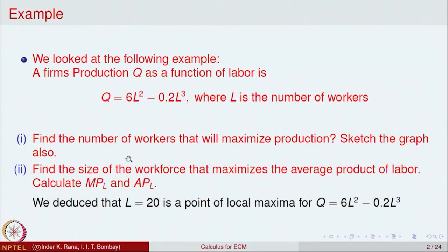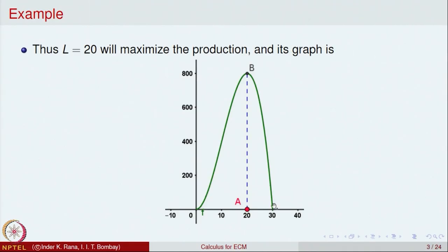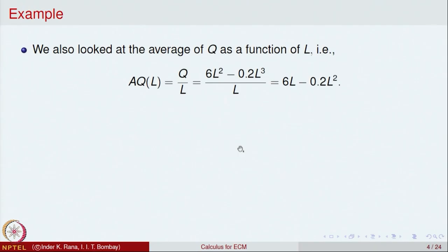We already determined that L = 20 is a point of local maxima for Q = 6L² - 0.2L³, and we plotted the graph of Q as a function of L showing the maximum at L = 20. Going further, we look at the average production of labor, which is total production divided by L. So APL = (6L² - 0.2L³) / L = 6L - 0.2L².